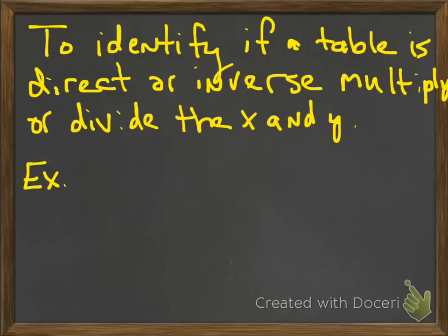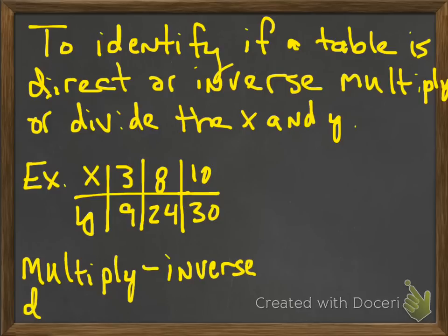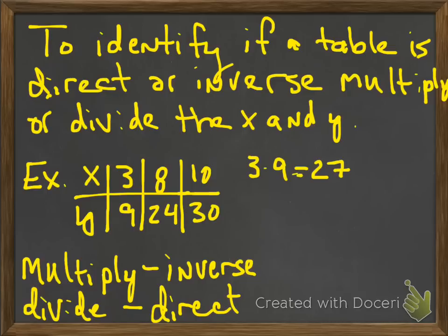So let's give an example here. So here's my example: x is 3, 8, and 10; y is 9, 24, and 30. And again, we're going to try to either multiply or divide. That means multiply the x and y's or divide the x and y's. If it works in multiplication, it's an inverse. If it works through division, it's a direct. Okay, so I start off, let's say, multiplying. 3 times 9 is 27. 8 times 24 is 192. Okay, whoops, let's go back there. Okay, since those two are not equal, 27 and 192, those two answers, it can't be inverse. So then I'm going to try direct.